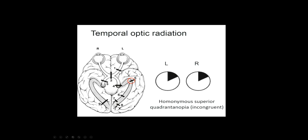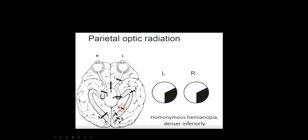If we have a problem with the optic radiations as they go through the temporal lobe — this is called Meyer's loop — then the patient will have visual loss in the contralateral superior quadrant. Because fewer optic radiation fibers go through the temporal lobe, it's a little bit of a pie in the sky — slightly less than a quadrant if the lesion is in the temporal lobe. Whereas a parietal lobe lesion will occupy a little more than a quadrant.